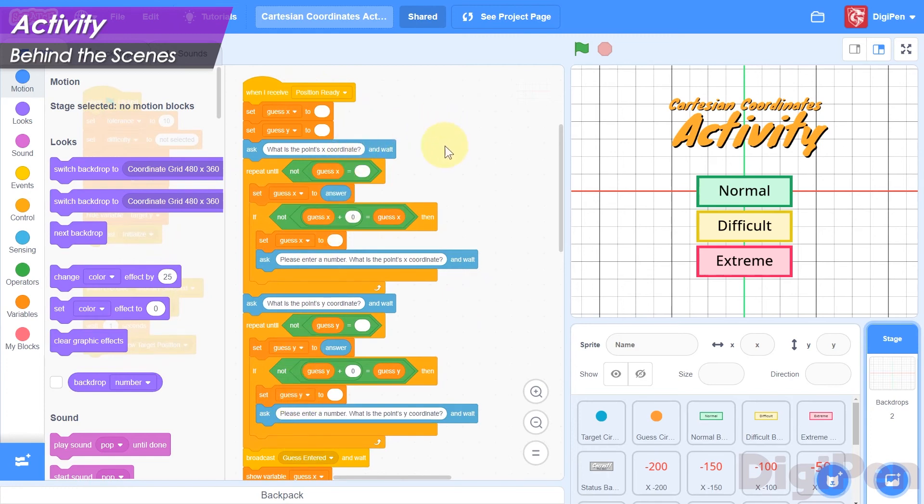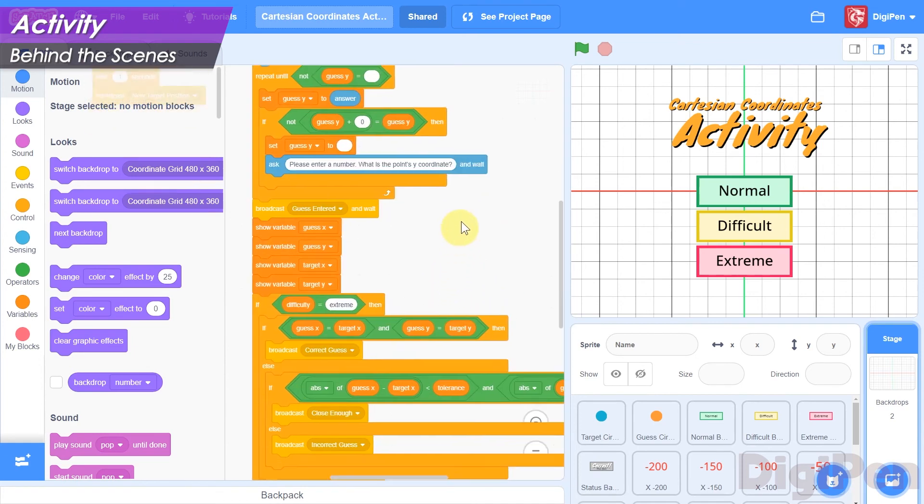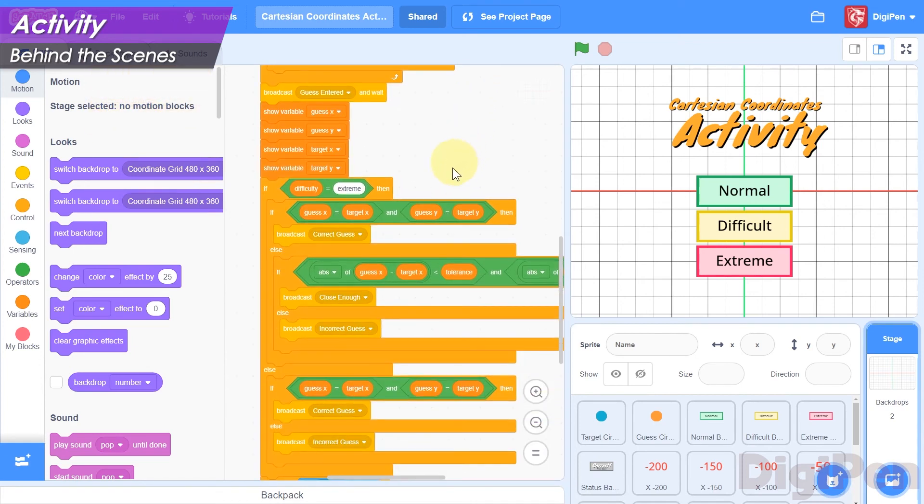First, it clears the guess variables, and then asks the player for their guesses for the x and y coordinates. After the player has entered their guesses, it checks whether they're correct.